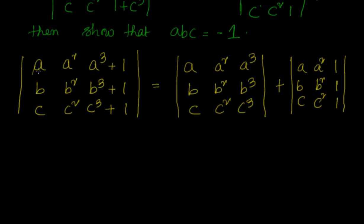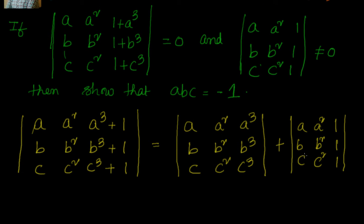Let me repeat that. Anytime if you see that in a particular column you have the sum of two expressions, you can actually split it into two different determinants. The determinant of the original matrix equals the sum of the two resulting determinants. That's a property of determinants.